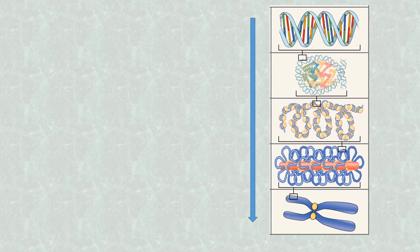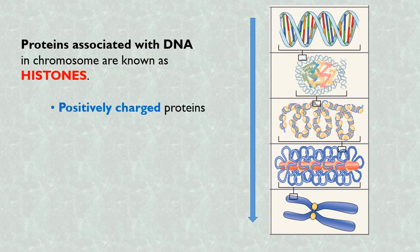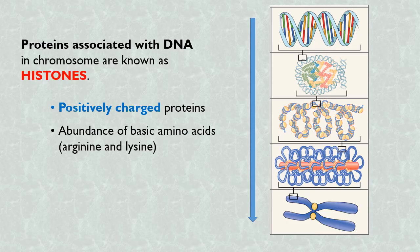The proteins associated with DNA in a chromosome are known as histone proteins or simply histones. Histones are positively charged proteins. This is because the basic amino acids arginine and lysine are abundant in them.